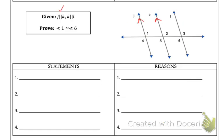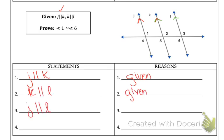On our last example it's pretty straightforward. Line j is parallel to line k, and line k is parallel to line l — those are both our givens. If that's true, then j is parallel to l by the transitive property of parallel lines — that's a property you learned.